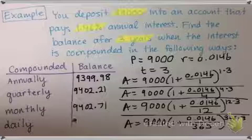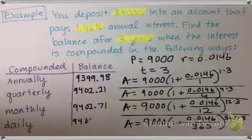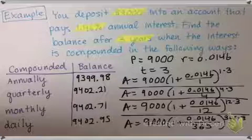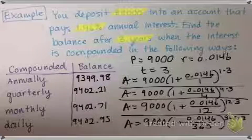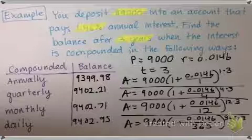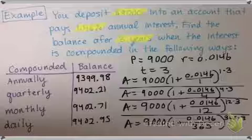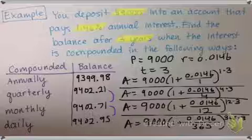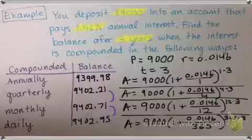And you should get $9,402.95. So you can see that each year, that first jump from annually to quarterly is a little bit larger. And then from there on, the extra amount that you earn is pretty incremental. But if you really are investing a large amount of money, it can make a difference.